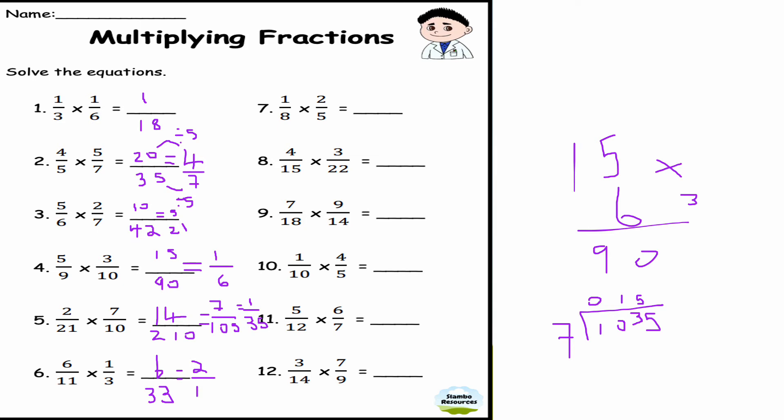This is question number seven: 1/8 times 2/5. Well, 1 times 2 is 2, and 8 times 5 is 40, so 2/40, which simplifies to 1/20, dividing top and bottom by 2. Hopefully it's making sense so far.